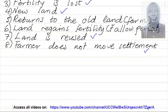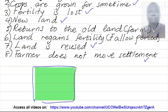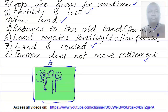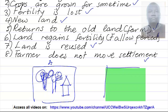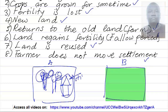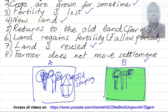Let me use this diagram to explain. The farmer is on land A. He farms on this land for some time and stays on this land, which is his farm A. When the soil loses its fertility, the farmer will move to land B, but he is still staying on land A. He goes to farm on land B.